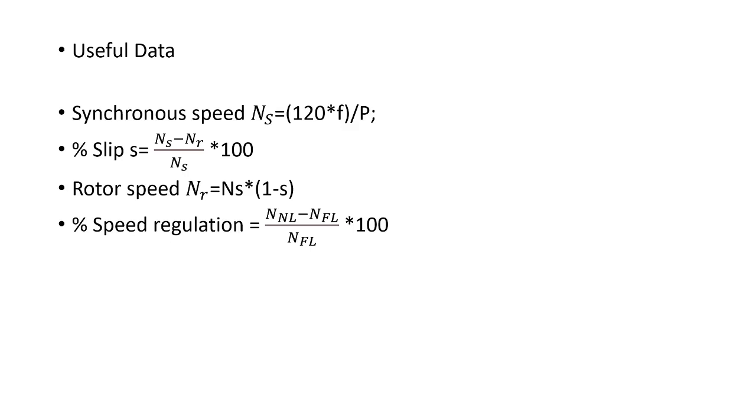The percentage speed regulation is given by the formula: (Nnl minus Nfl) divided by Nfl into 100, where Nnl is the no-load speed of the motor and Nfl is the full-load speed of the motor.